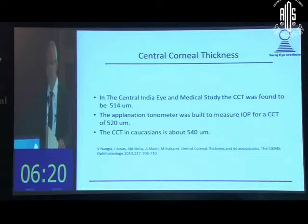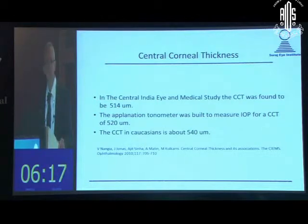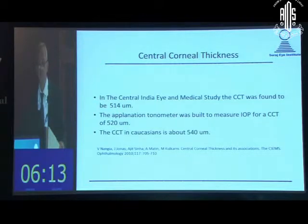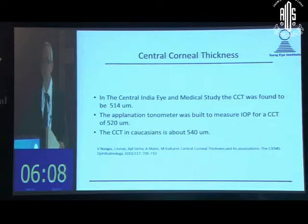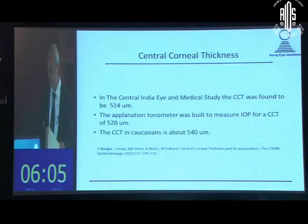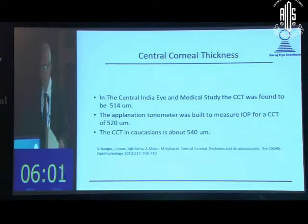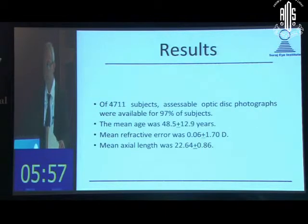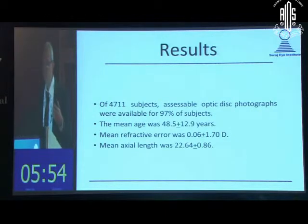The third clinical translational finding was that the central corneal thickness was found to be 514 microns. The applanation tonometer was built to measure intraocular pressure for a central corneal thickness of 520 microns, and the central corneal thickness in Caucasians is about 540 microns. The impact of this finding on IOP measurement accuracy is therefore well evident.